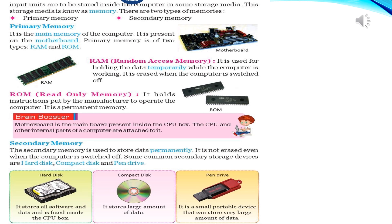Hard disk stores all software and data and is fixed inside the CPU box. Compact disk stores large amounts of data. Pen drive is a small portable device that can store very large amounts of data.